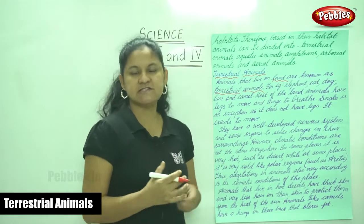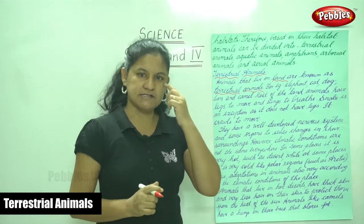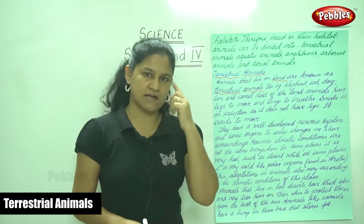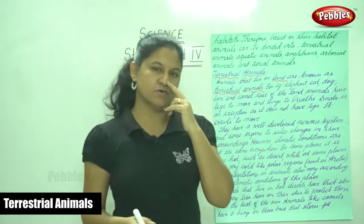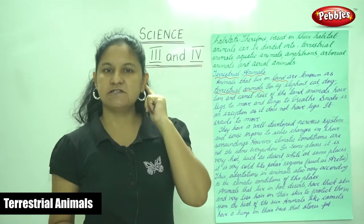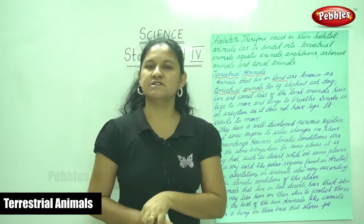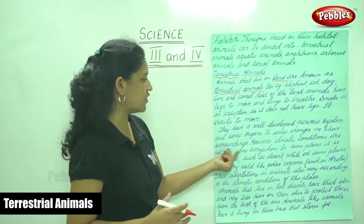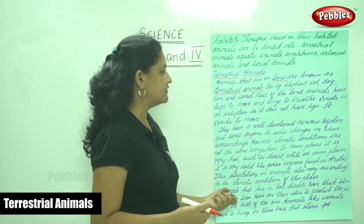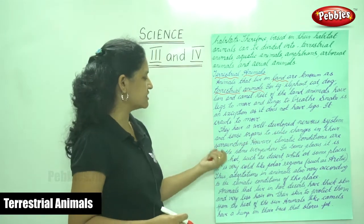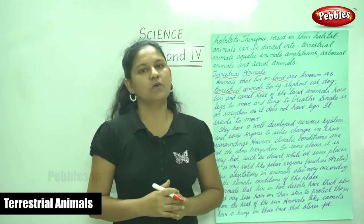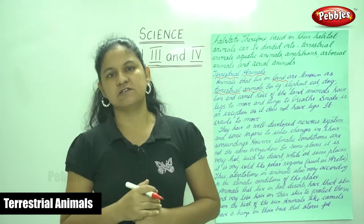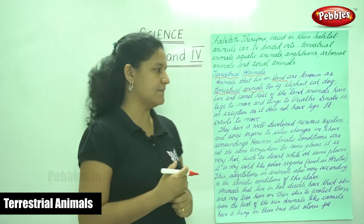Terrestrial animals have a well-developed nervous system and sense organs. The five sense organs are the eyes, nose, ears, tongue, and skin. The eyes give us the sense of seeing, the nose the sense of smell, the tongue the sense of taste, the ears the sense of hearing, and the skin the sense of touch. Just like humans, animals also have these five sense organs, which help them sense changes in their surroundings and detect danger approaching.